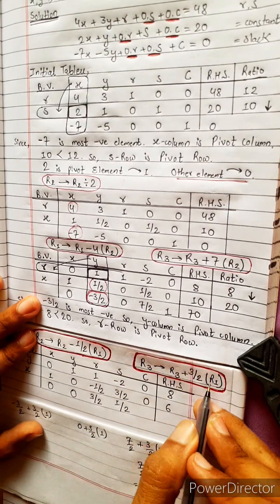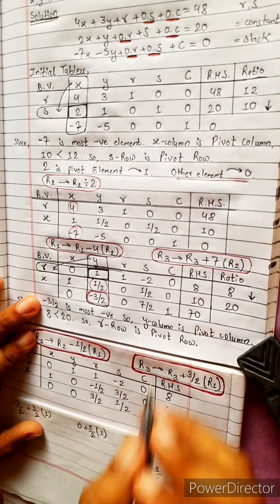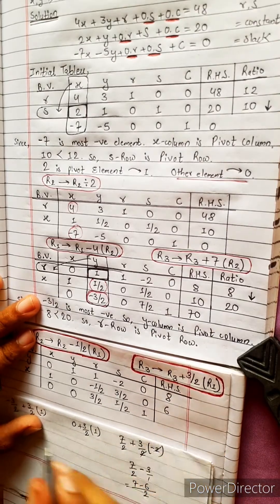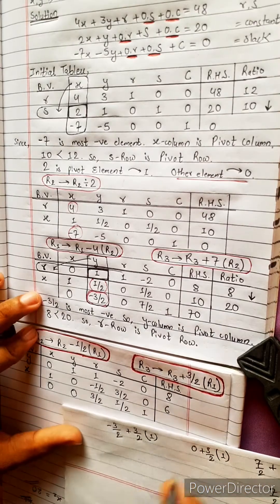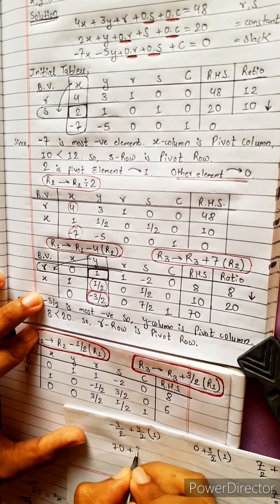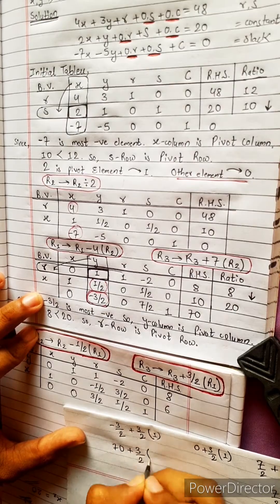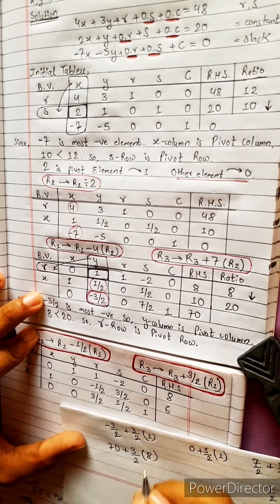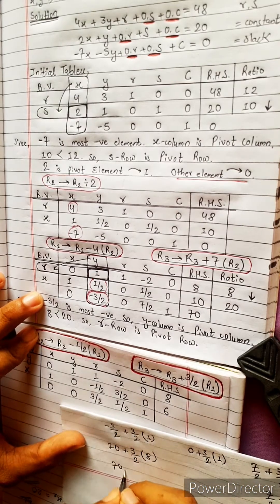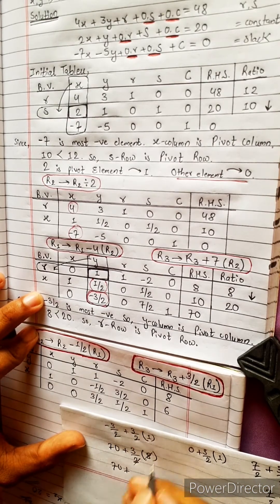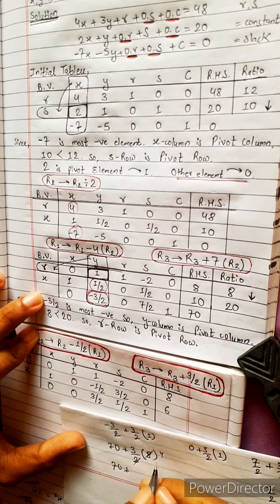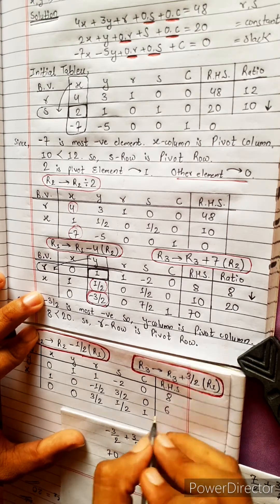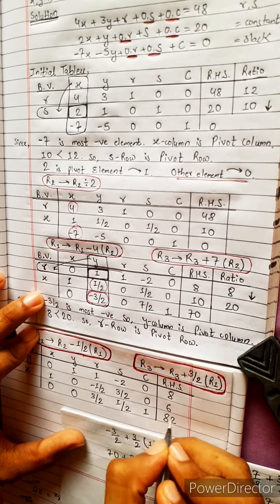R3: R1 R3 1 equals R1 0, direct 1 by. R3 equals R2 plus 3 by 2 times R1. 70 plus R2 equals R2, giving 82.